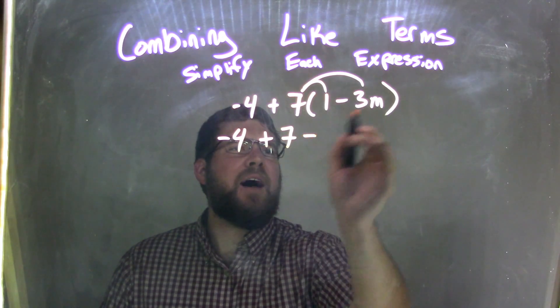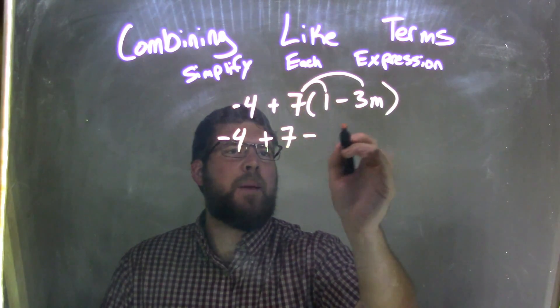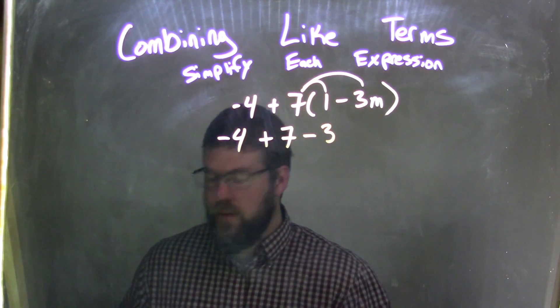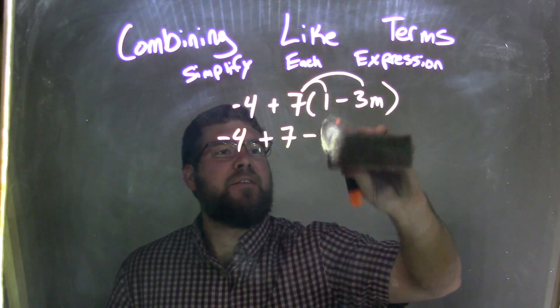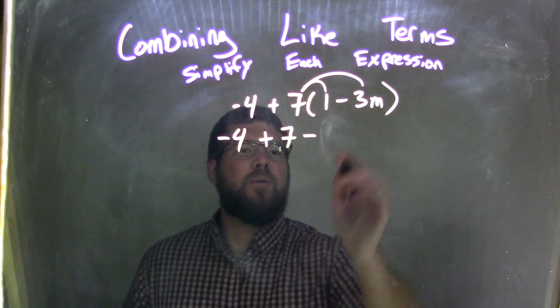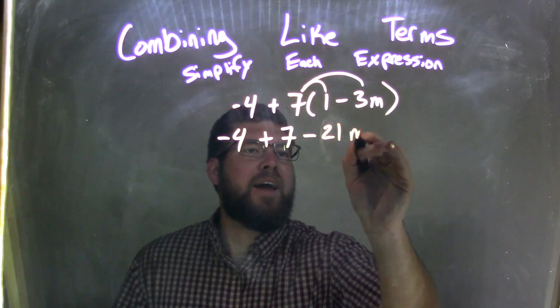And 7 times 3m, bring on the minus sign, 7 times 3m is 21. I'm saying 21 right into 3 here. Is 21m.